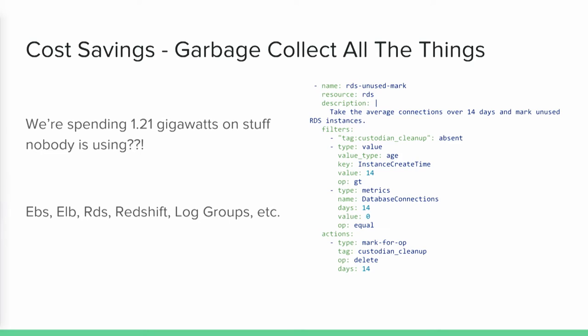Figuring out where you're spending your costs: databases can be quite costly — Redshift databases, RDS databases. If these things have zero connections over two weeks, they're not being used, so we can garbage collect them. Or an ELB with no instances attached is just garbage that's been left around and maybe forgotten about. Custodian integrates CloudWatch metrics support — any resource that supports CloudWatch metrics can be used as a filter. In this case we're looking at all databases older than two weeks that have had zero connections for the last two weeks, and then we initiate a multi-step workflow for cleaning up and deleting them. There are other resources I'd recommend doing cleanups with as well.